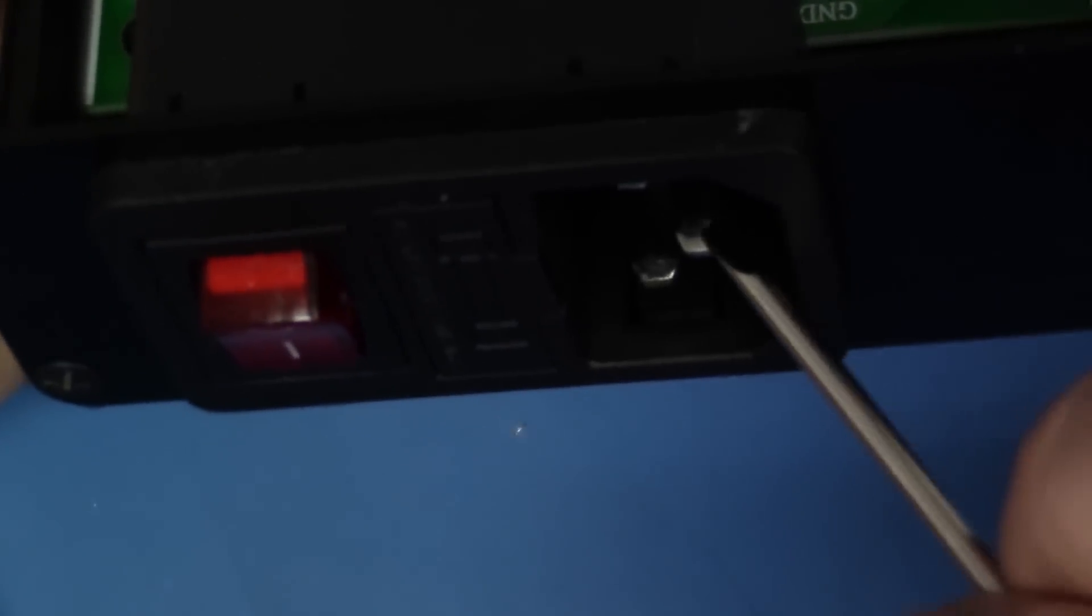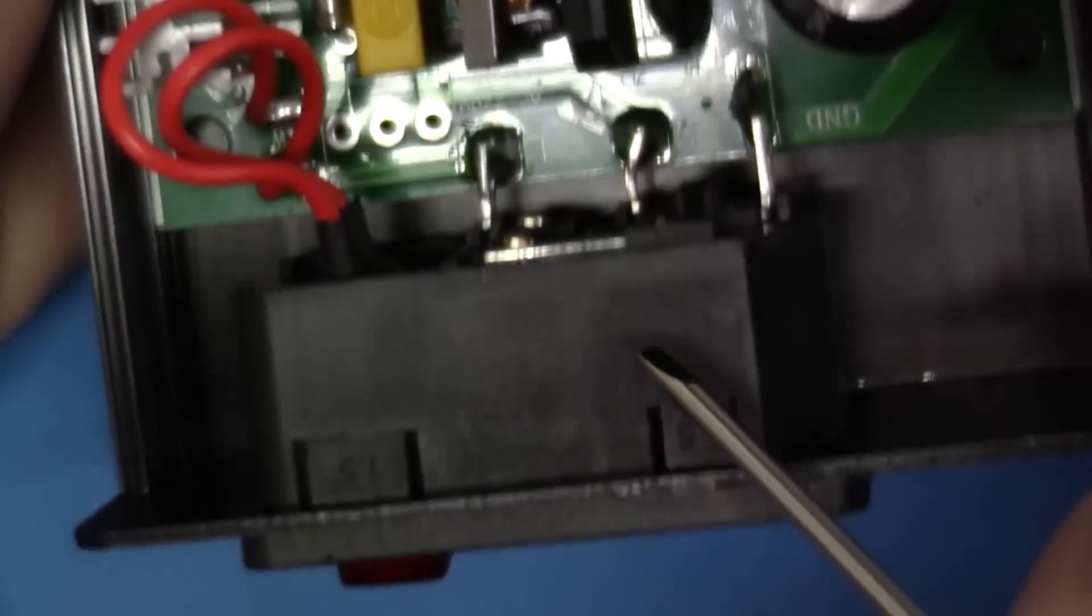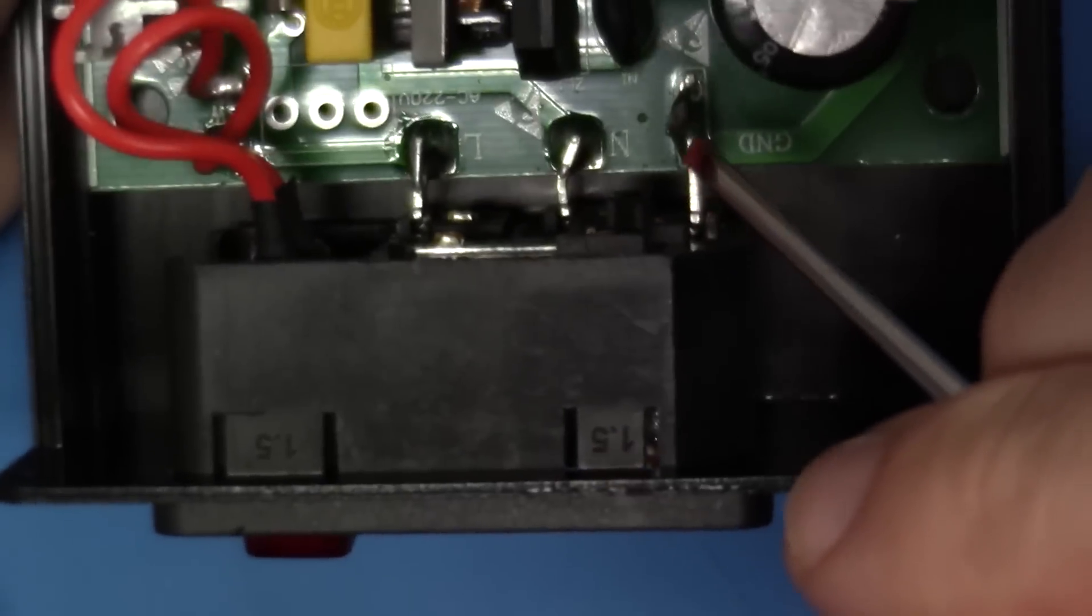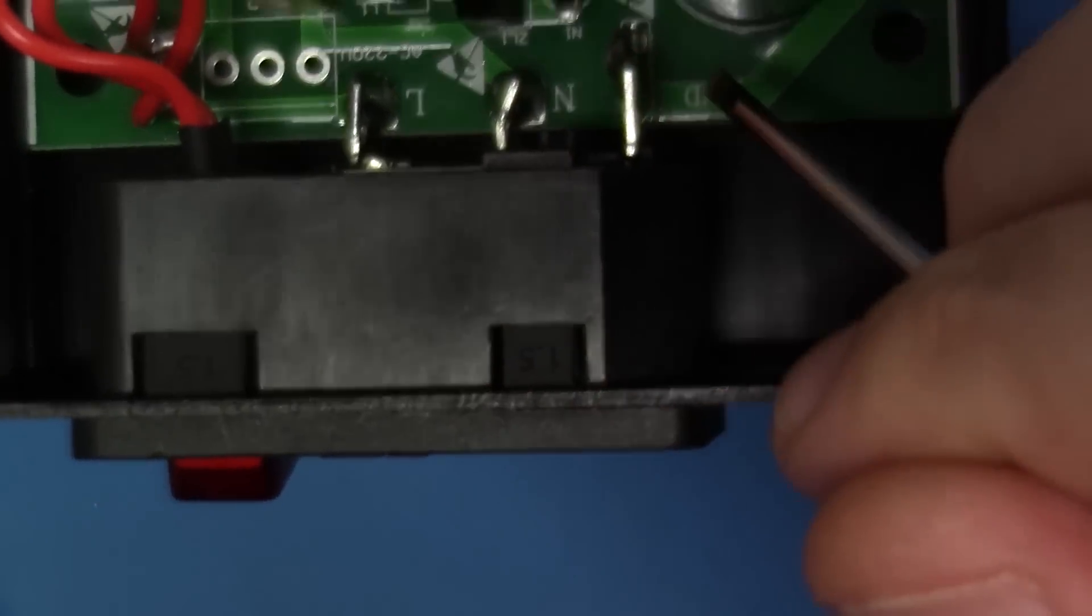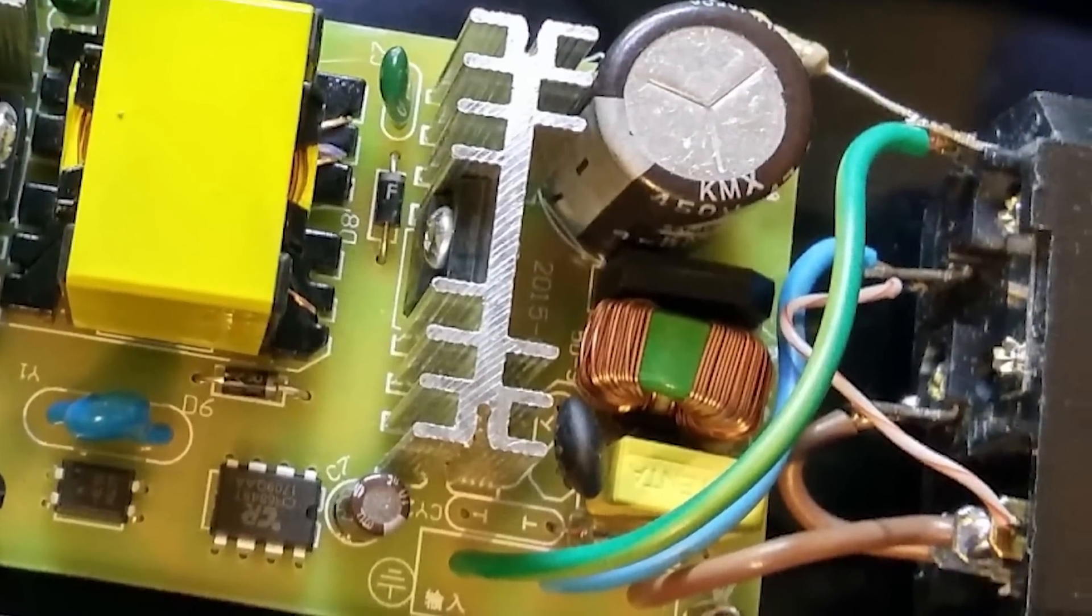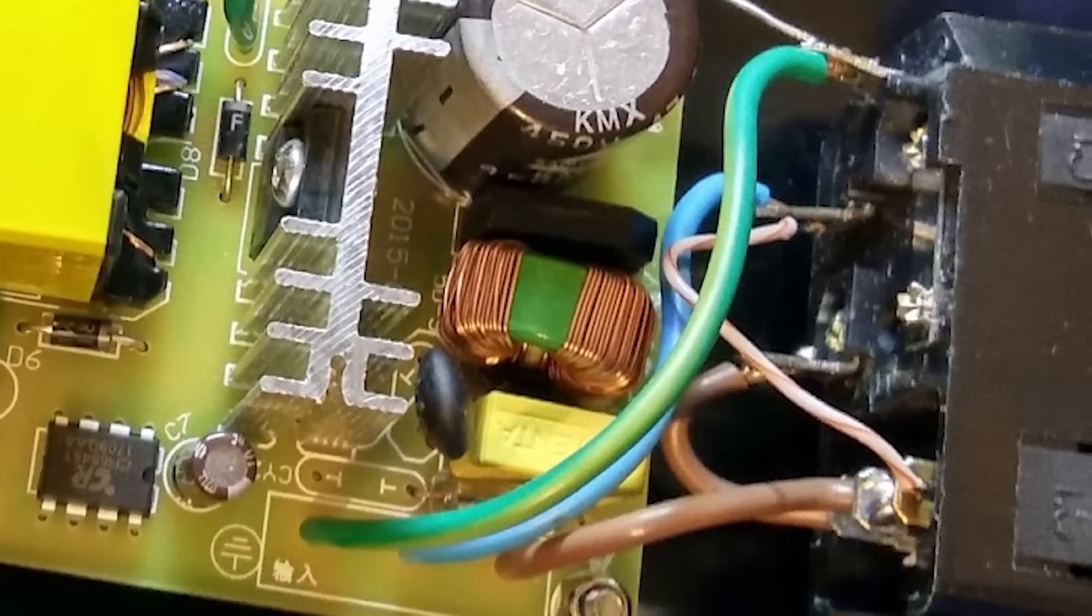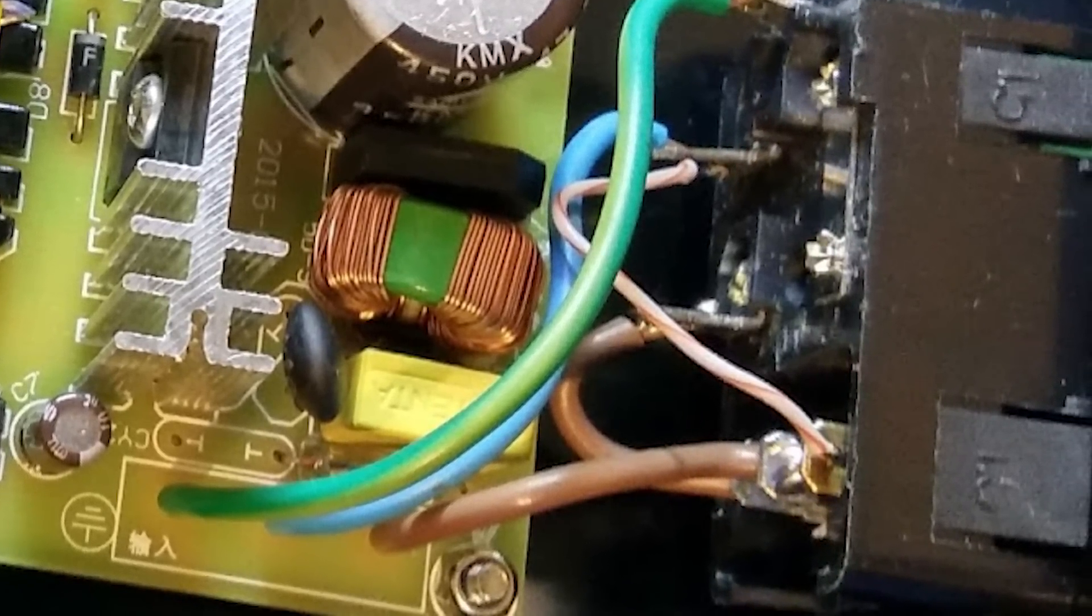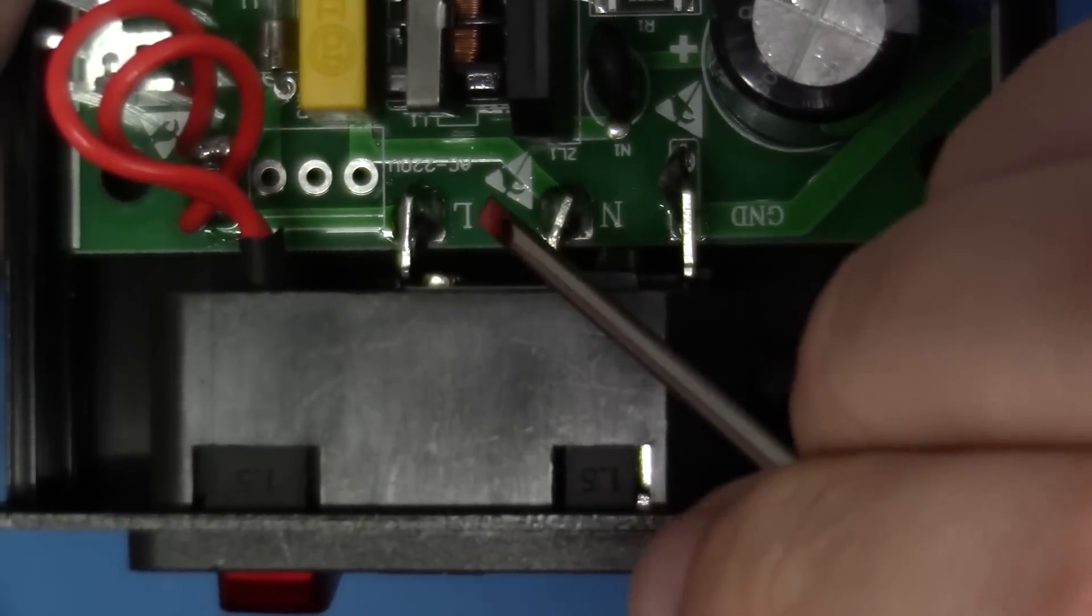We're looking at the AC mains input side, and this is where the quality really started to take off between this unit and the other units that I looked at. Our line, neutral, and ground AC lines are hard soldered into the main board. On all the other units that I looked at, the input side of the AC was either very poorly crimped. This is a nice, permanent connection, and it looks really good.